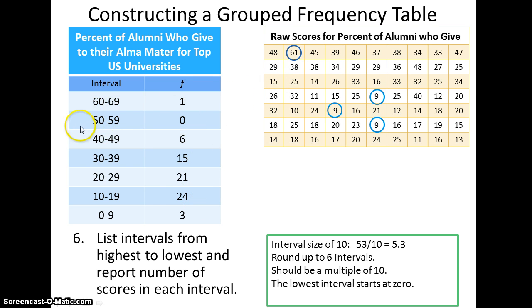Notice, again, here in this interval range from 50 to 59, we actually don't have any scores, and we still list the interval and include that score of 0. So all of the rules that we've been using so far apply.